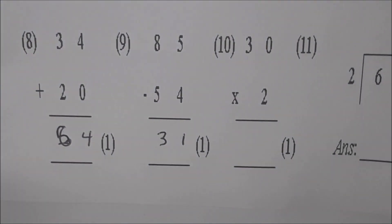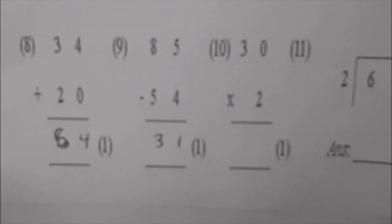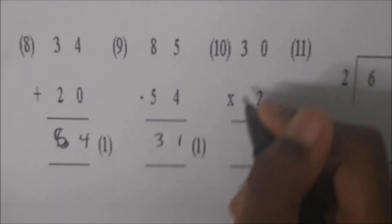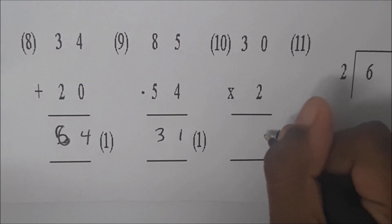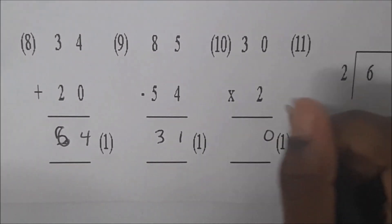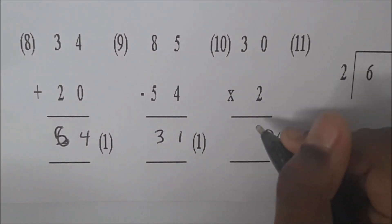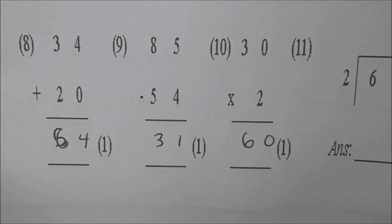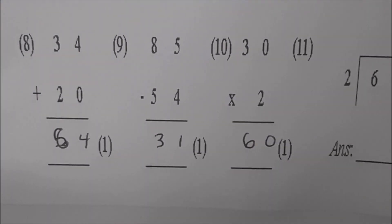Now you're multiplying in number ten. Thirty times two. Tell us what you're multiplying first. Two times zero is zero. Two times three is six. Very good. The answer is 60.